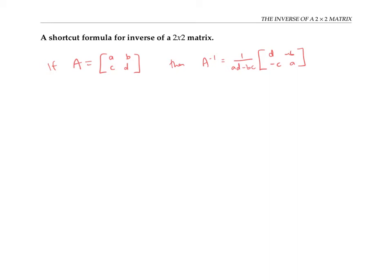And in fact, I should be a little more precise and say that if ad minus bc is not equal to zero, then A inverse exists and equals this matrix here. But if on the other hand, ad minus bc is equal to zero, then it turns out that A inverse does not exist.